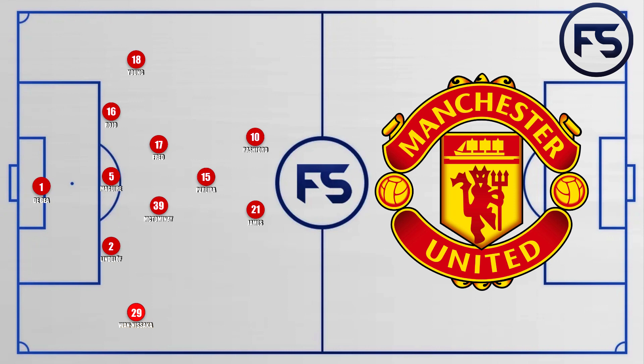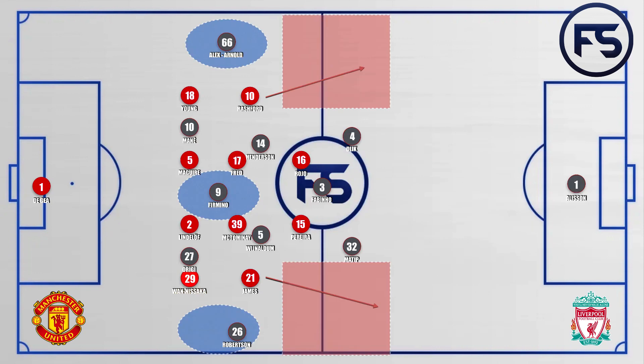Manchester United started with a 5-2-1-2 system. I thought Liverpool would start with a 4-3-3 with high fullbacks and Manchester United would have had to deal with those. My thoughts were that Manchester United would suffer in the wide areas and struggle to pick up Firmino, and that Liverpool's high fullbacks would offer space into the channels on the counter-attack. I thought Rashford and James would be key, but I didn't expect them to play five at the back.